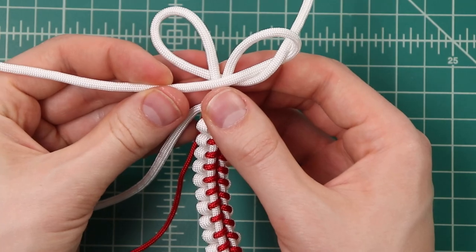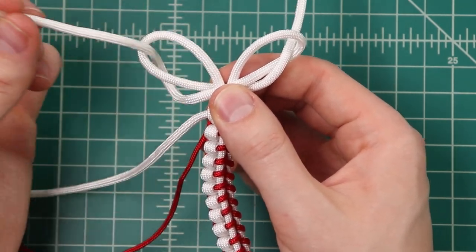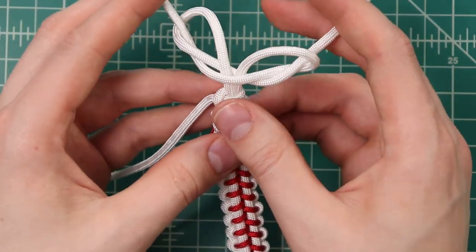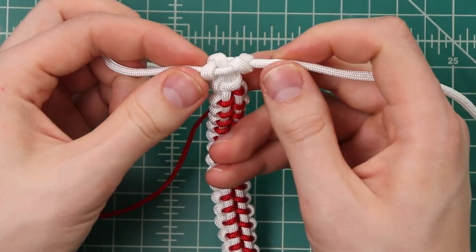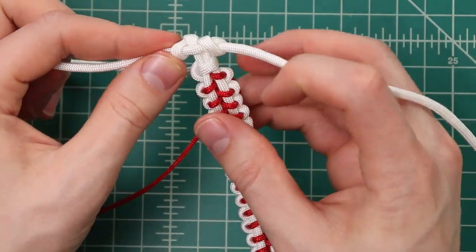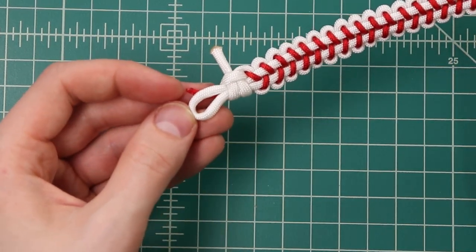And this cord over here from our right side loop, bring it around left and up through that left hole. Tighten those ends down and we're left with this knot right here. This is a nice toggle that catches on the loop on this other side and makes a nice bracelet closure.